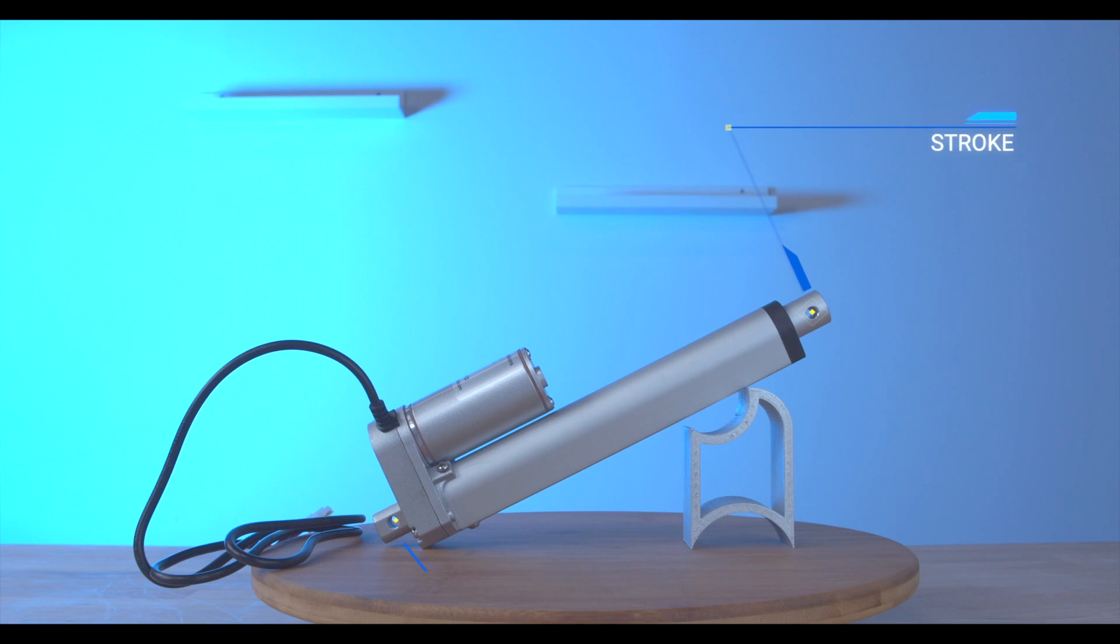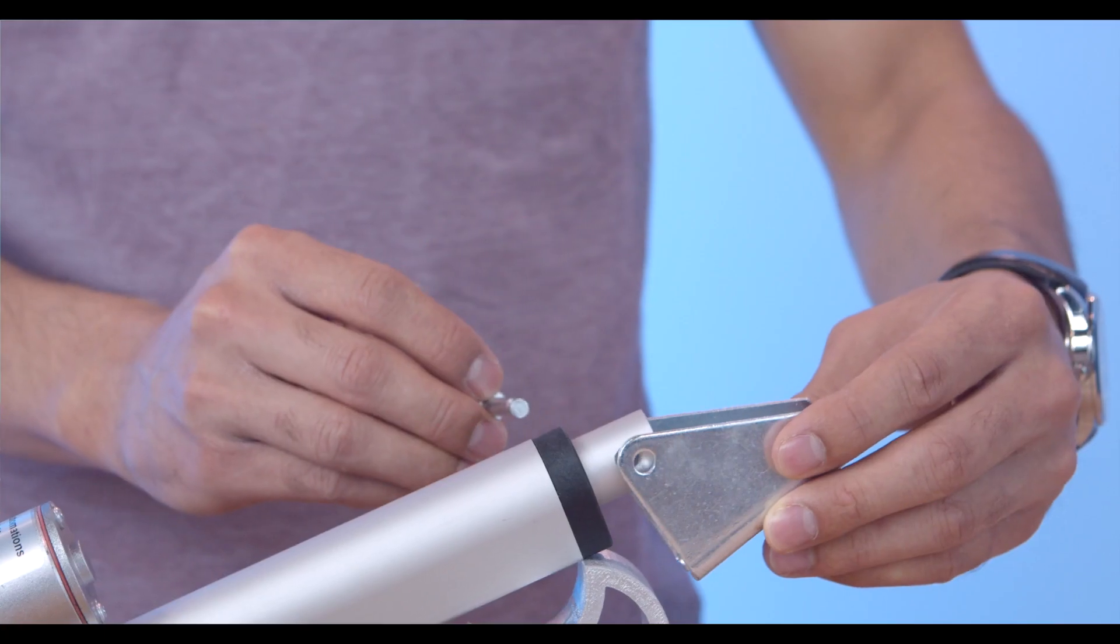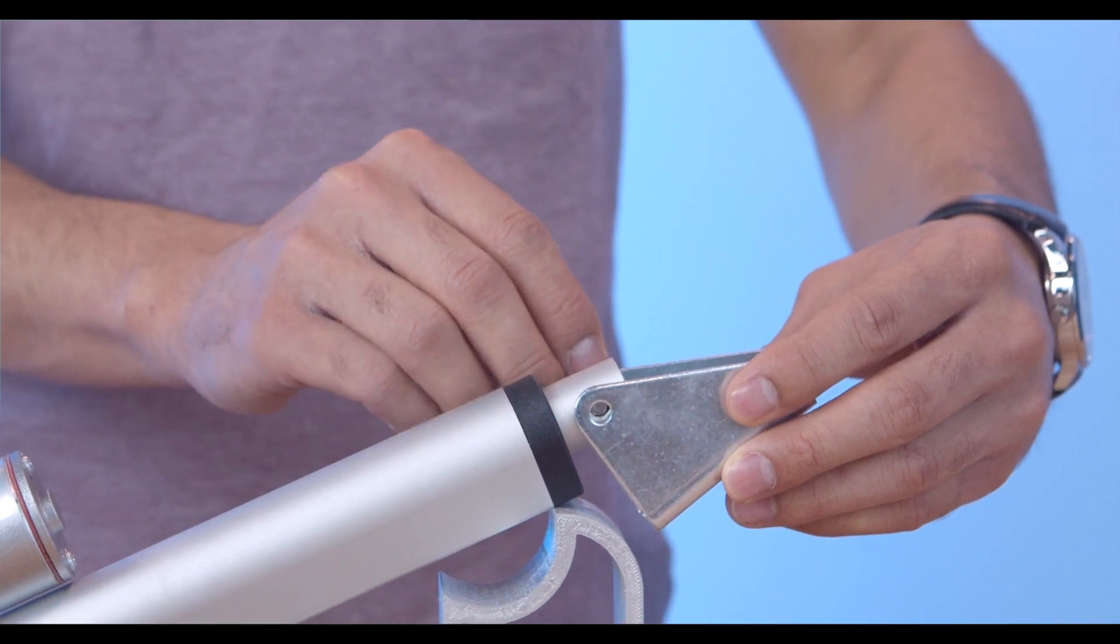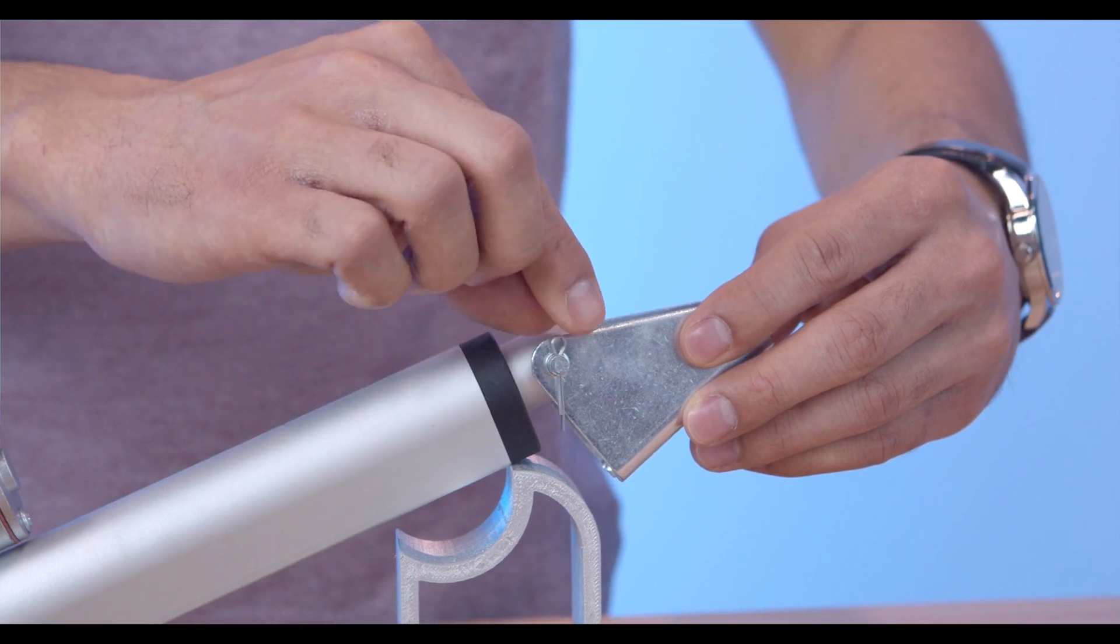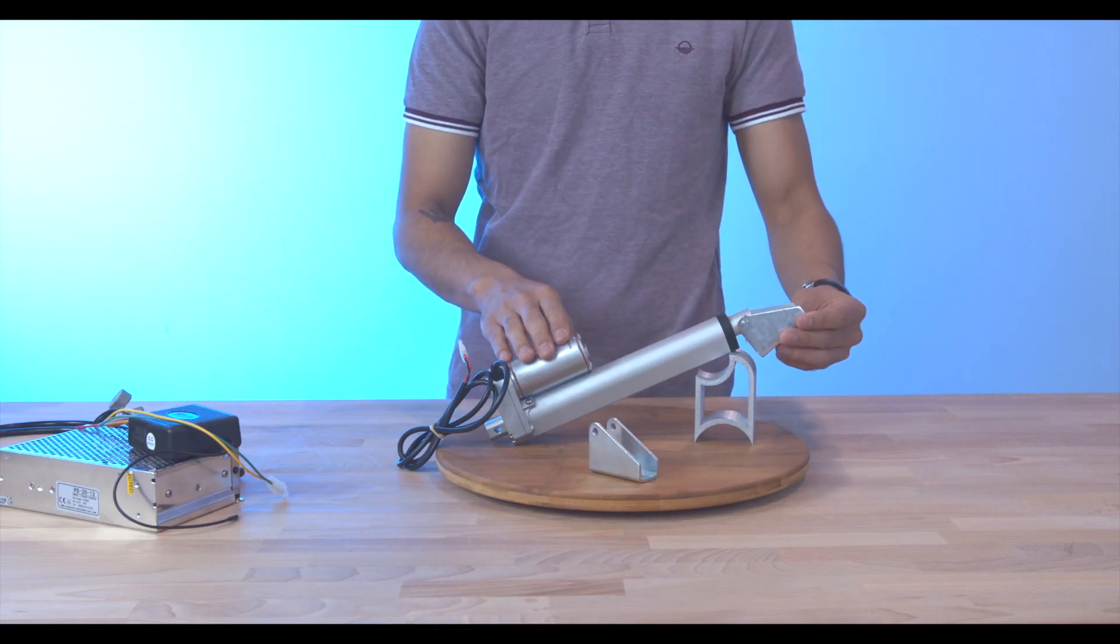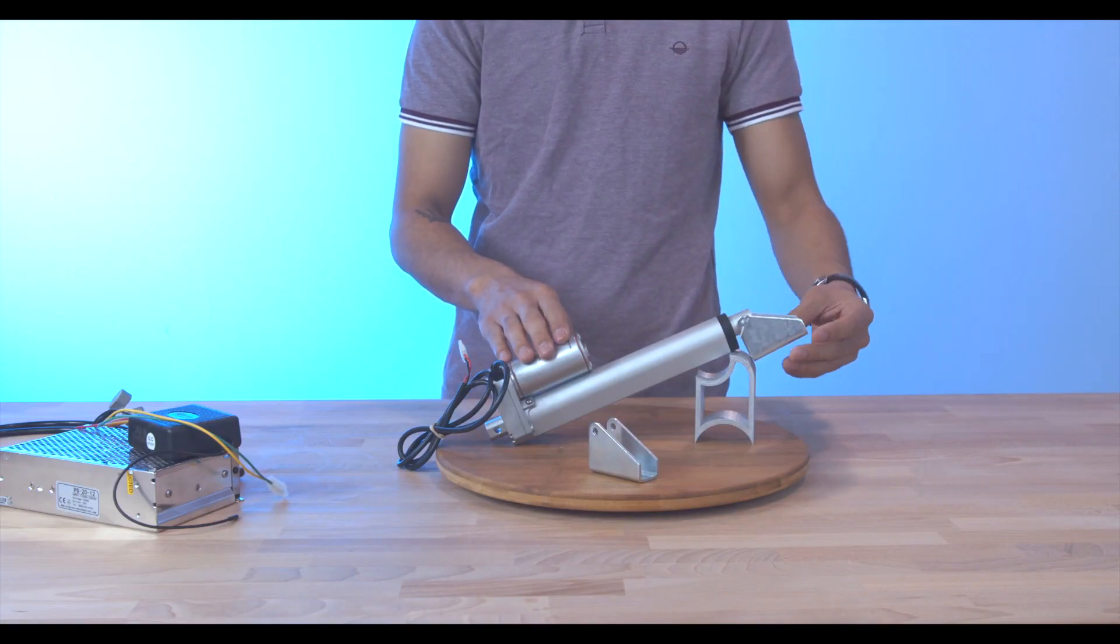Attaching each bracket is simple. First, slip the bracket into place, grab that mounting pin, insert it to attach, and finally insert the cotter pin to hold everything in place.